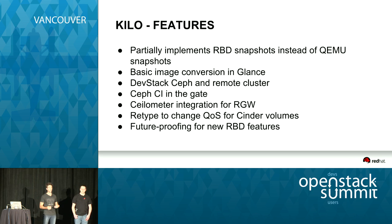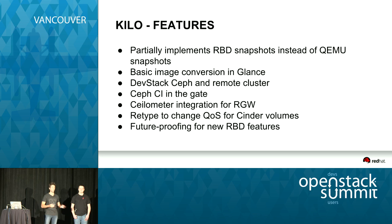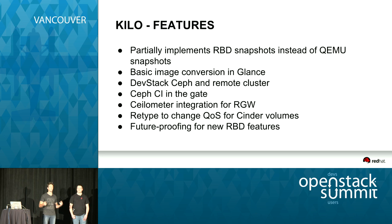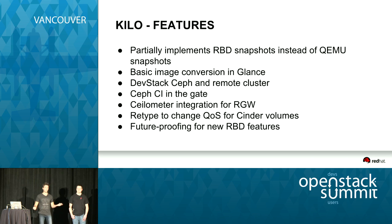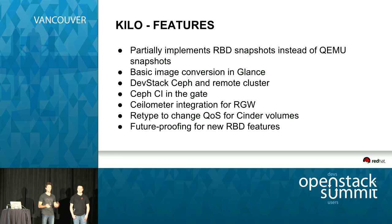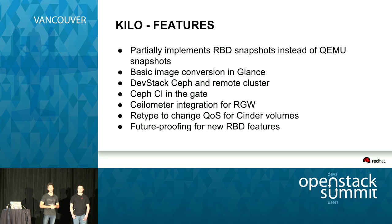We support re-tab to change QoS on the fly. Since Ceph doesn't support any QoS at all, it's always good to implement libvirt throttling. Now if you create a new volume type, associate QoS on it, and then re-tab, you will change QoS on the fly for that volume — which is really useful. Future-proofing for new RBD features is something we do at the code level: a way to detect new features for new RBD releases. Josh is going to walk through what happened in Hammer and what's coming in the next Ceph release regarding new RBD features.